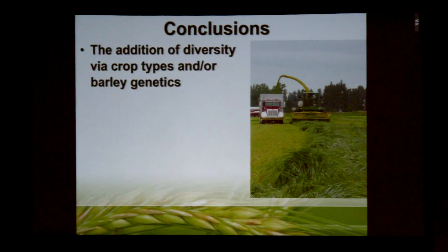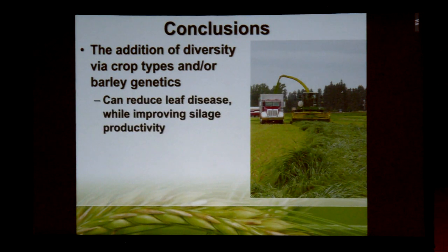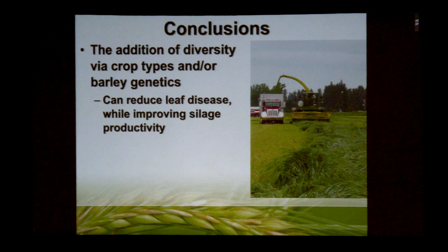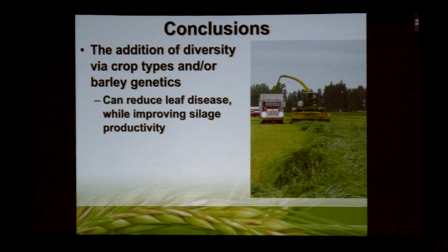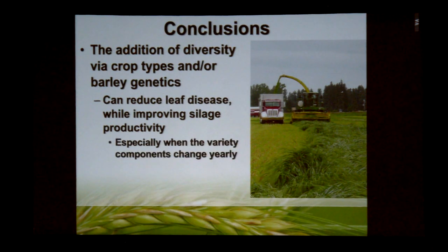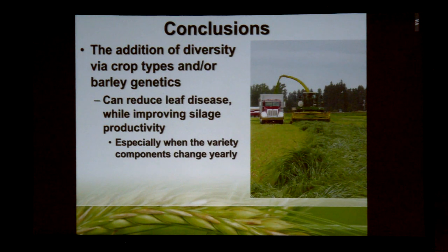So our conclusions from this trial: the addition of diversity, either in terms of crop types or genetics, helped to reduce disease and improved silage productivity. The intercrop of triticale and barley — as Tim McAllister here at Lethbridge would confirm — provided very good quality silage for cattle production, and this effect was especially pronounced where we changed the components each year, adding more genetic diversity.